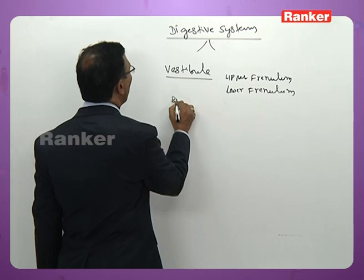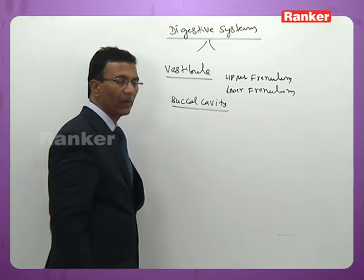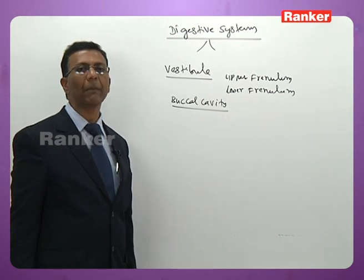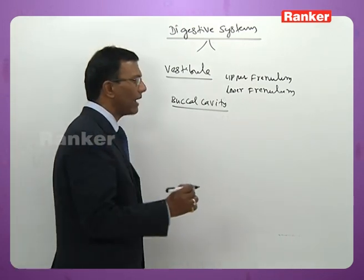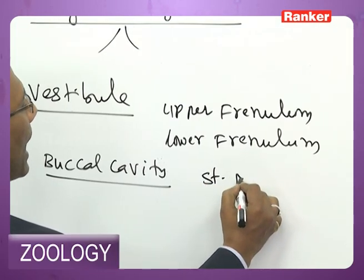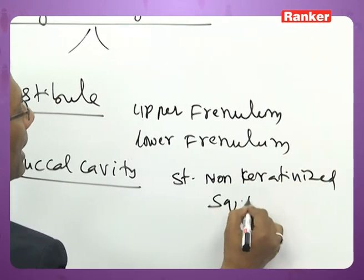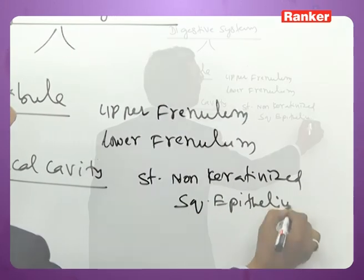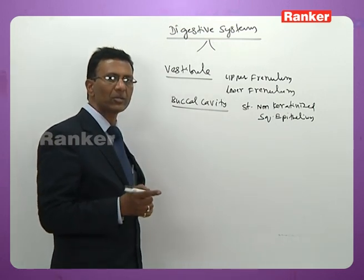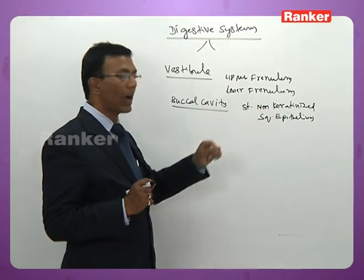The vestibule opens into the buccal cavity. The entire buccal cavity in the human body is lined by an epithelium. This question has been asked several times in M-set and other exams — the entire buccal cavity is lined by stratified, non-keratinized squamous epithelium.